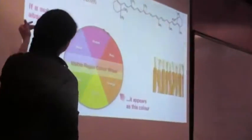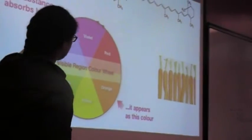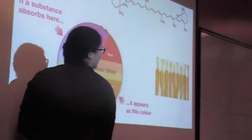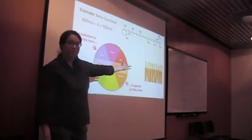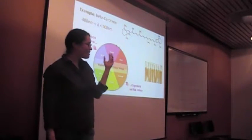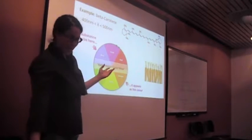So according to our color wheel here, if the substance absorbs in the blue, it's going to appear orange. And that is why carrots are orange. That is the pigment that gives color to carrots.